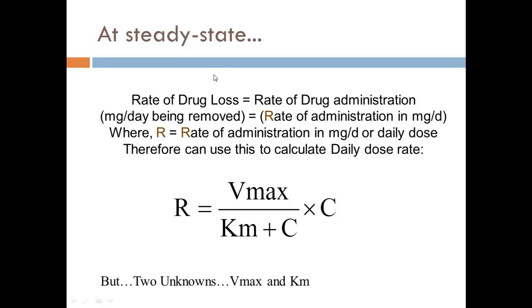What we do is say the rate of drug loss is equivalent to the rate of drug administration at steady state. Drug in and drug out are in equilibrium. The amount of drug removed per day is equal to the rate of administration at steady state. R is the rate of administration in mg per day, and we set that equivalent to the rate of drug loss, which is Vmax over Km plus C times C. We don't know Vmax or Km.